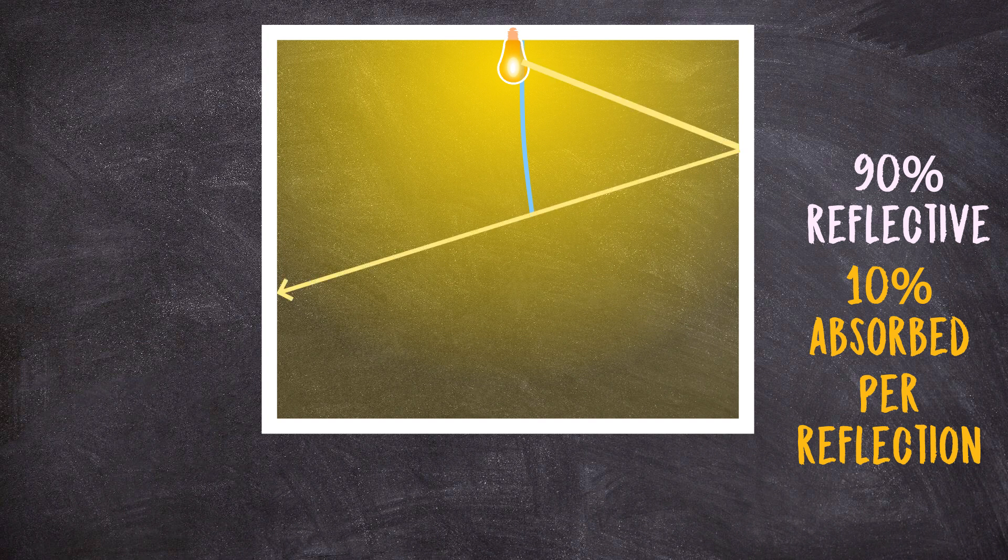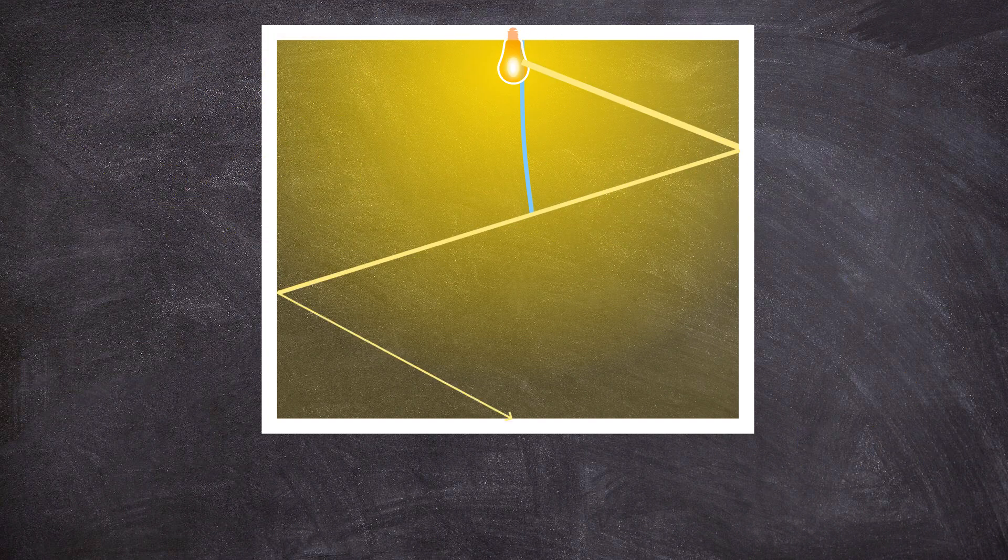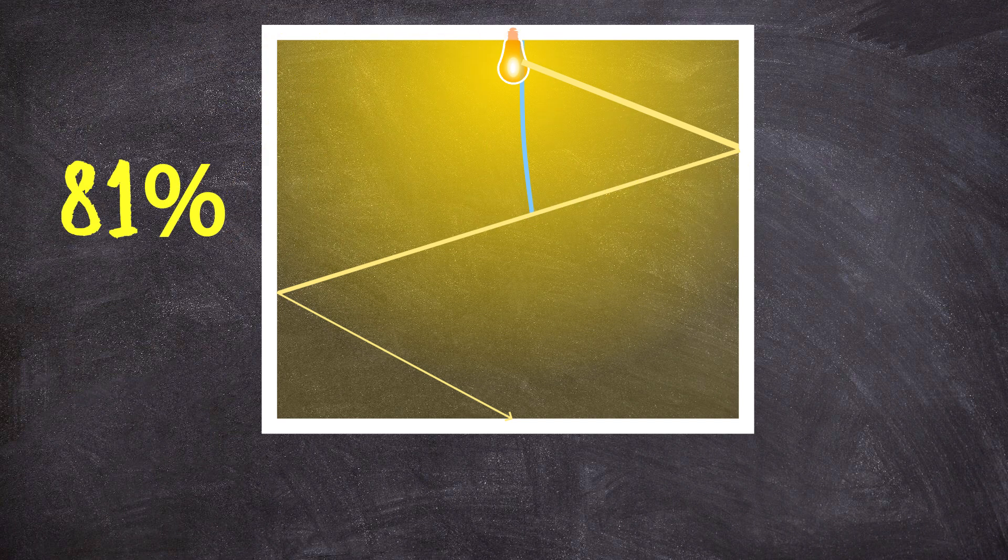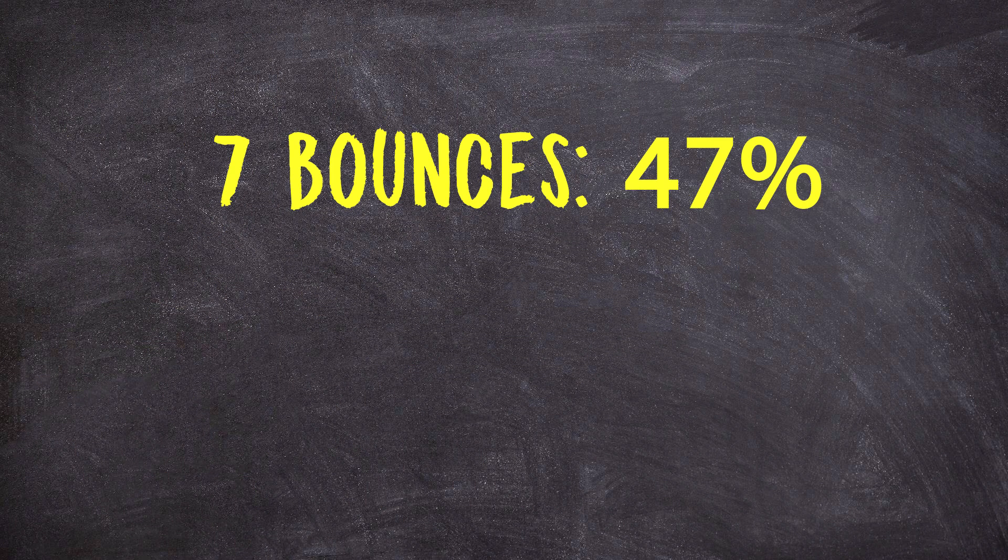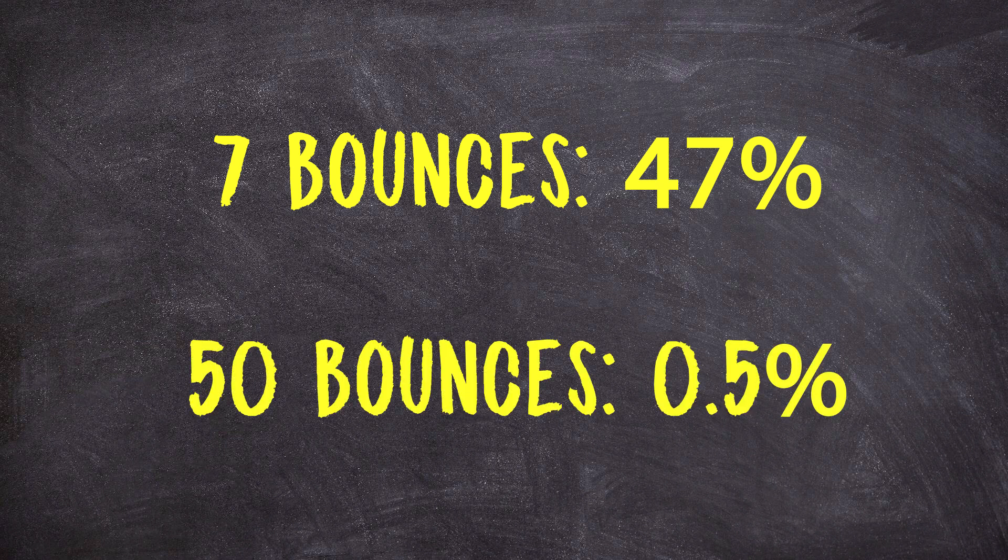And thus after one bounce, there will only be 90% of the light left. After two bounces, there will be 81%. After three, there will be 71%. And after just seven bounces, there will only be 47%. So after seven bounces, already half of it is absorbed. And after like 50 bounces, there's only half of 1% of the original light left.